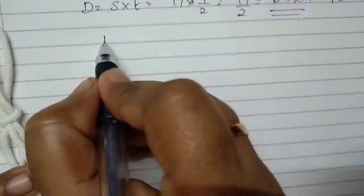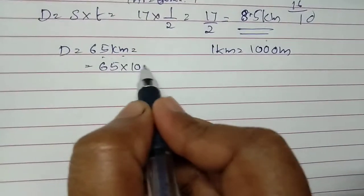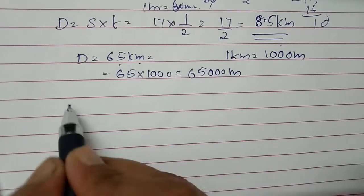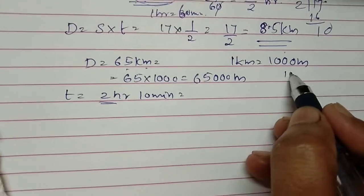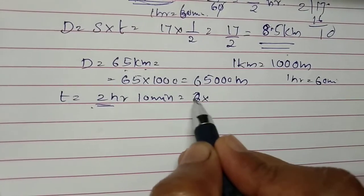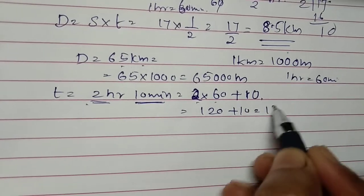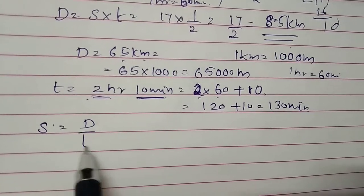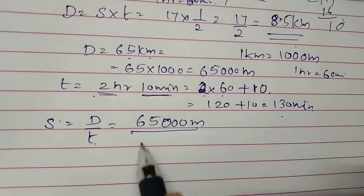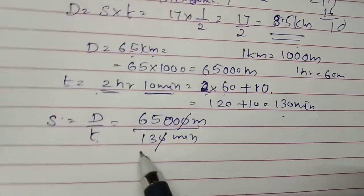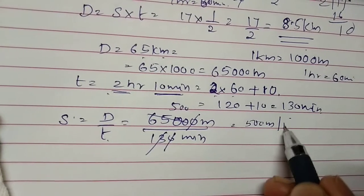Distance equals 65 kilometers. We know 1 kilometer equals 1000 meters, so 65 kilometers becomes 65,000 meters. Time is 2 hours 10 minutes. We convert: 1 hour equals 60 minutes, so 2 hours is 2 × 60 = 120 minutes, plus the additional 10 minutes, giving 130 minutes total. Speed equals distance divided by time: 65,000 divided by 130. Cancelling zeros, 13 × 5 = 65, so the answer is 500 meters per minute.